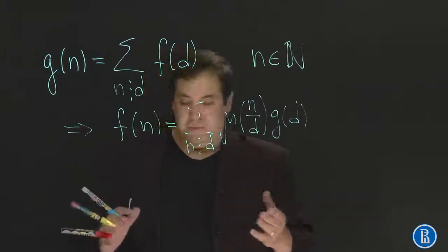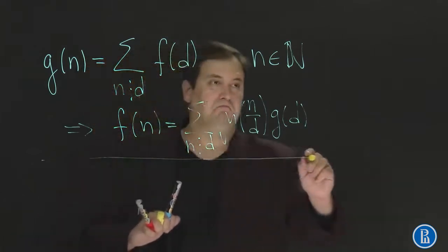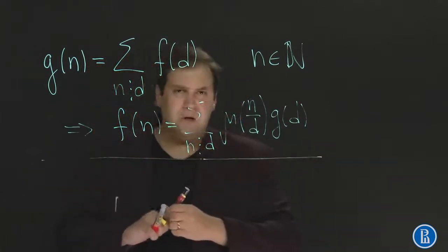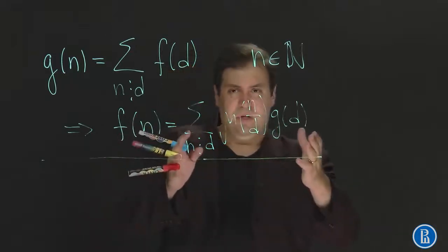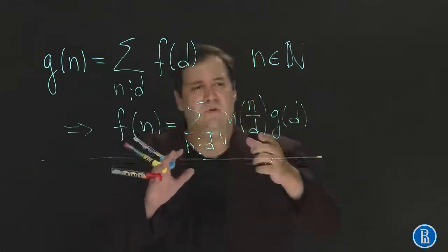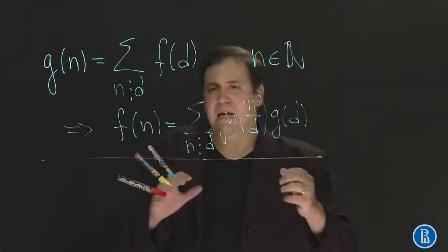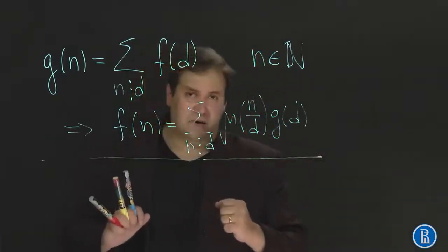Let's prove it. This will be rather long but essentially simple proof. Just take this formula, this sum of mu of n over d multiplied by g of d and prove that it is indeed equal to f of n.